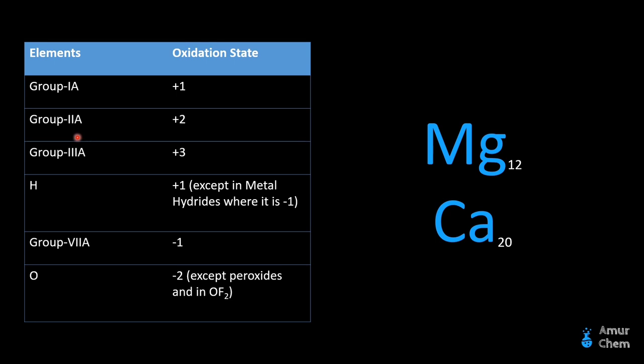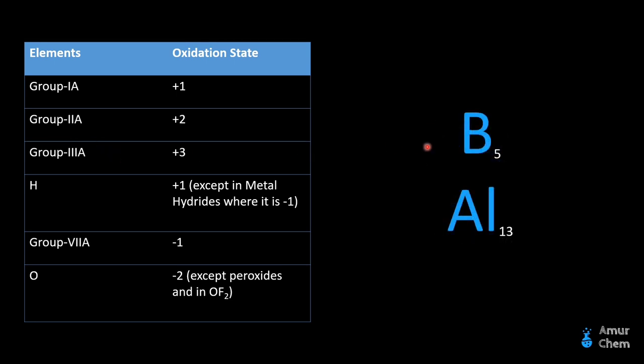In the same way, Group 3A elements — for example, boron and aluminium — both have an oxidation state of positive 3 because these elements contain 3 electrons in their valence shell. So they will lose those 3 electrons, form a tripositive cation, and an oxidation state of positive 3 will be achieved.